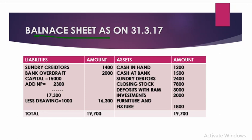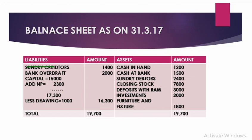Now we make the balance sheet. It is prepared on the last day of the financial year: 'Balance Sheet as on 31st March 2017.' The left-hand side shows liabilities and the right-hand side shows assets, arranged on the basis of liquidity. Liquid assets are written first: cash in hand, cash at bank, sundry debtors, closing stock — which also appears in the trading account since it was given outside the trial balance — deposits, investments, furniture and fixtures. The total of assets is 19,700. On the liability side, current liabilities are written first — sundry creditors, bank overdraft — then capital, with net profit added and drawings deducted. The total of the liability side is also 19,700, so total assets equal total liabilities.